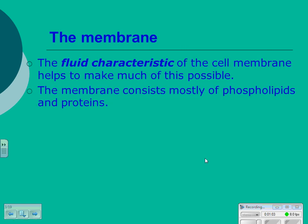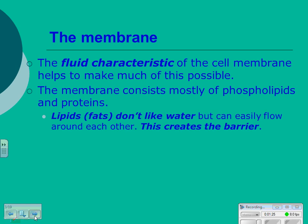The membrane itself is really important in this process. Those fluid characteristics of the lipid bilayer as it flows and allows some things across but not others pretty much makes it possible. The membrane consists mostly of phospholipids and proteins. Lipids don't like water. They can easily flow around each other, kind of like oil does when it's on water, and this is what creates the barrier.